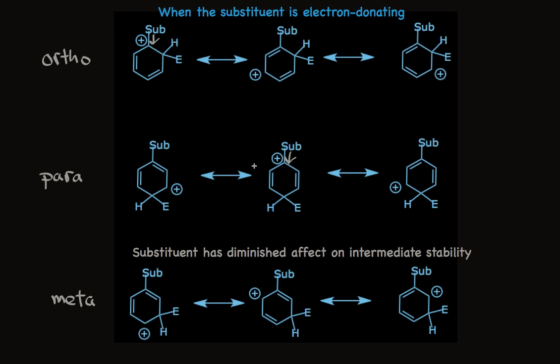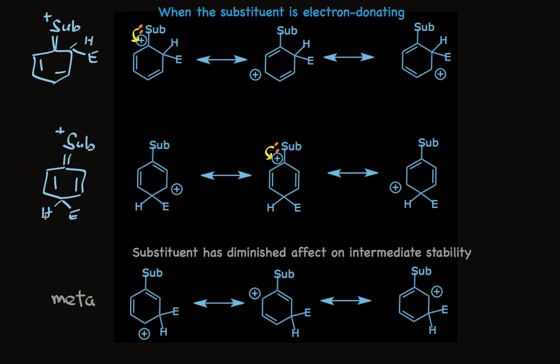Some substituents have a lone pair of electrons that can be shared by resonance, making a fourth resonance form possible. That special resonance structure, with positive charge on the substituent at the ortho or para position, is particularly good because every atom has a filled outer shell. That's why a methoxy substituent is much more ring-activating than a methyl group. Substituents with an unshared lone pair available for resonance can form this fourth resonance structure, and those compounds react much faster.